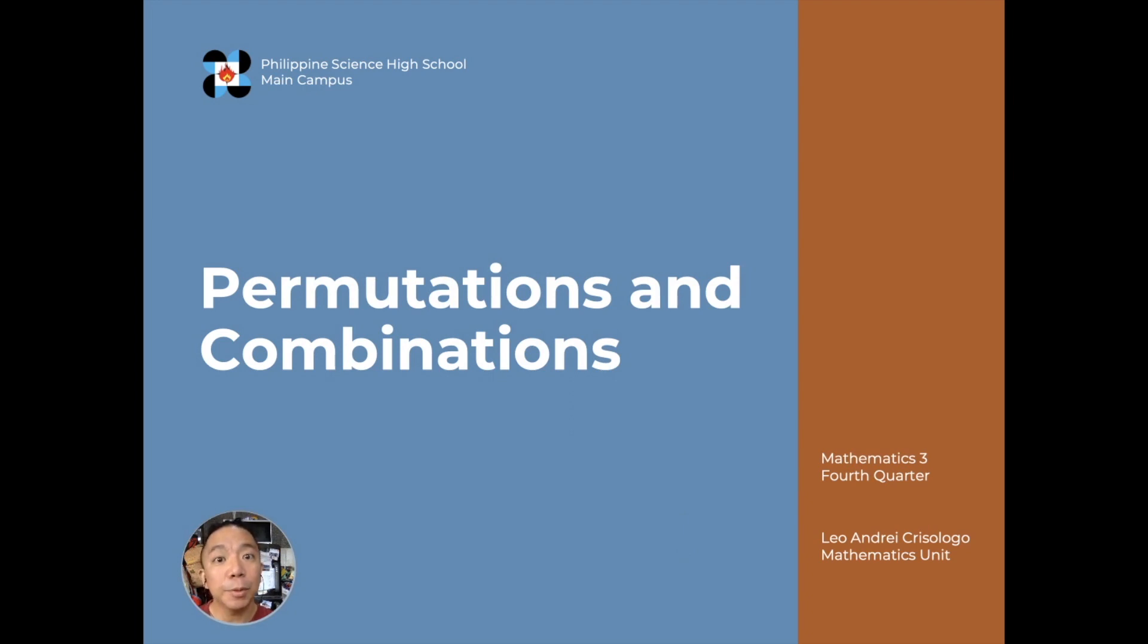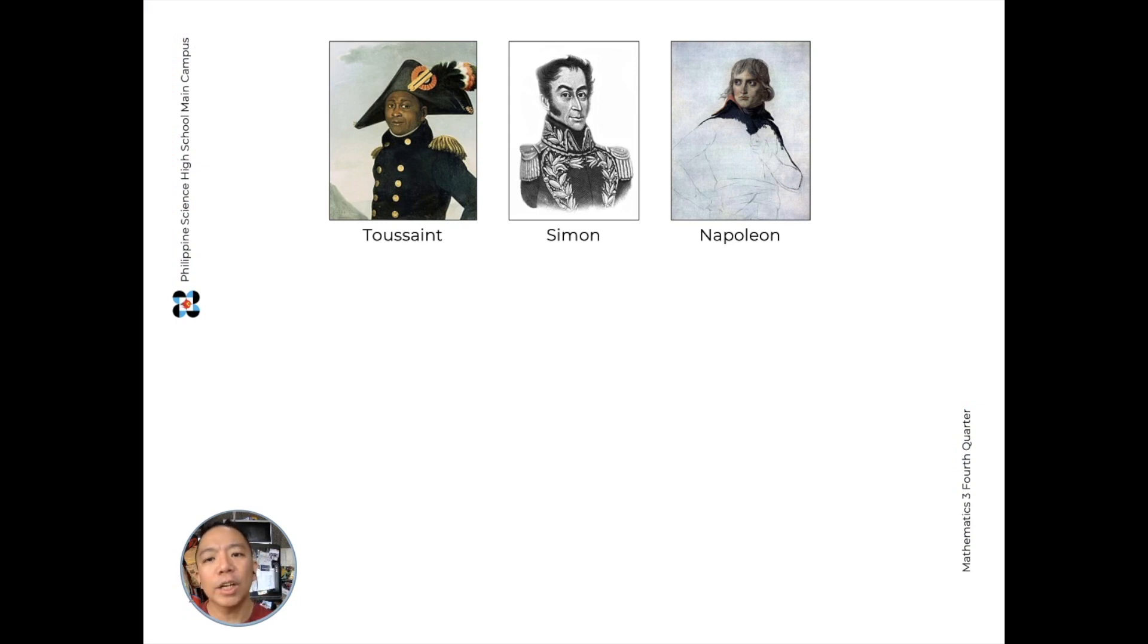Good day! Our lesson for today is permutations and combinations. So let's say we have three conquerors: Toussaint, Simone, and Napoleon.